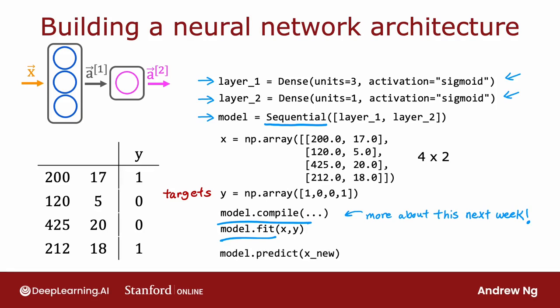you just have to call model.predict on x_new, and this will output the corresponding value of a2 for you given this input value of x. So model.predict carries out forward propagation, or carries out inference for you using this neural network that you compiled using the sequential function.